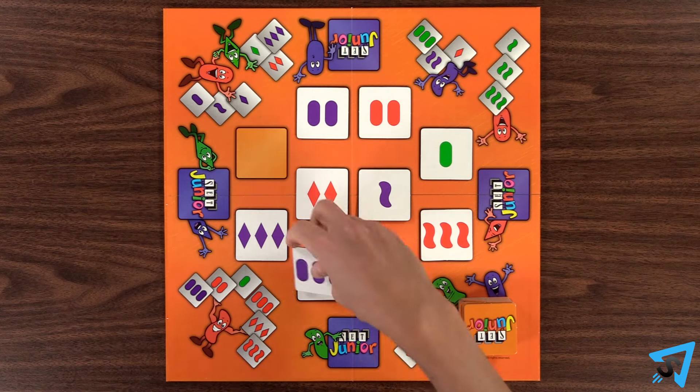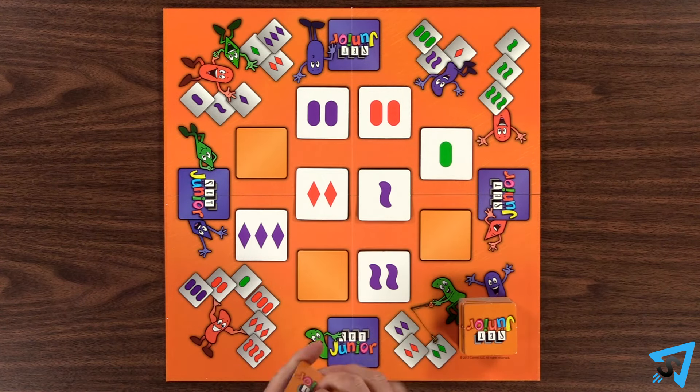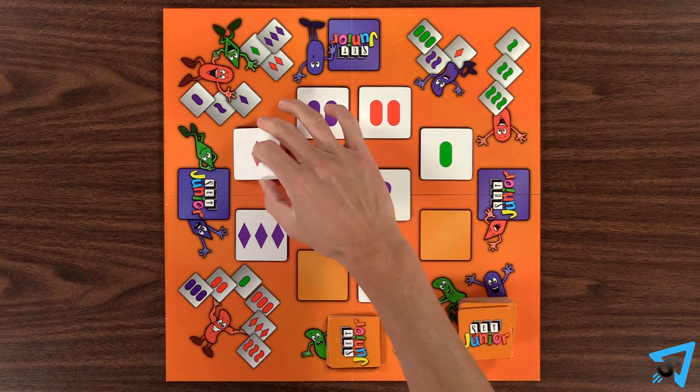When you see a set, point it out. If everyone agrees that it is a correct set, then you collect those tiles face down on the purple square in front of you. Replace the three missing tiles with new ones from the deck and play continues.